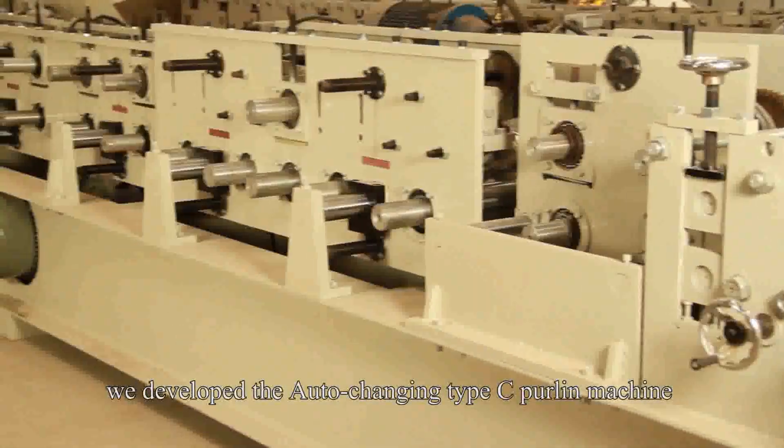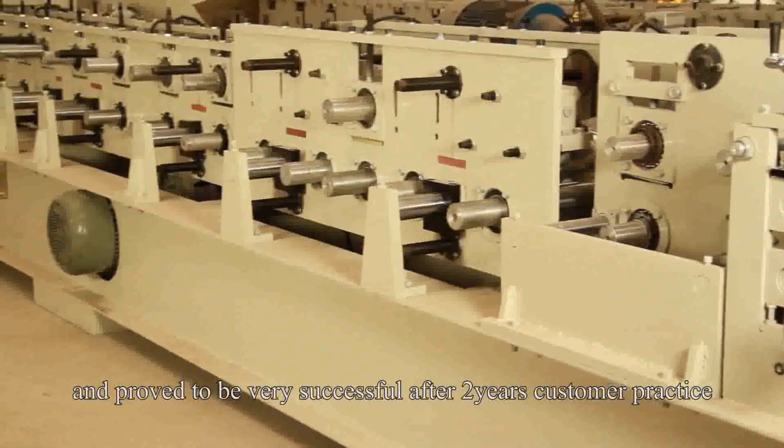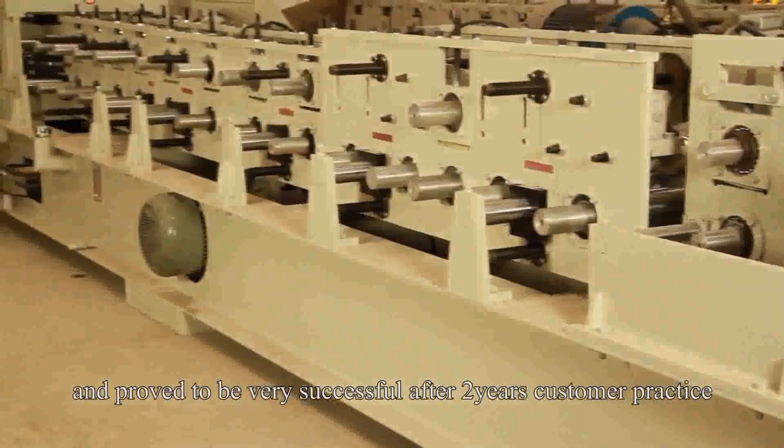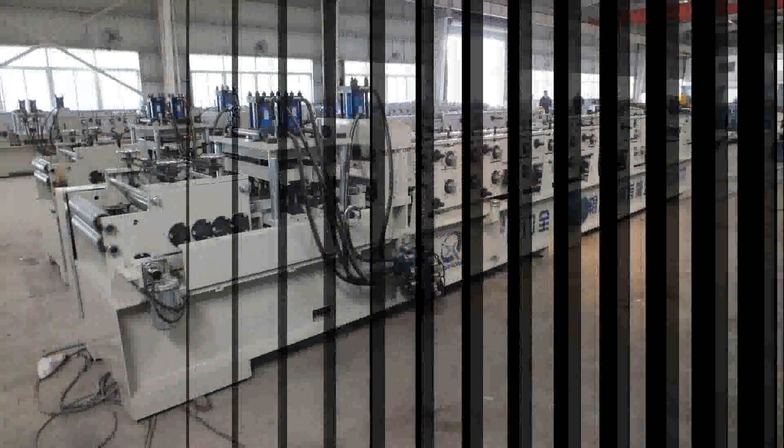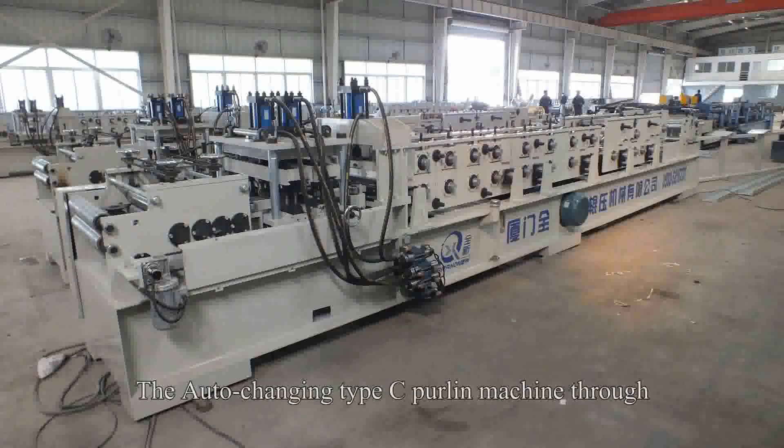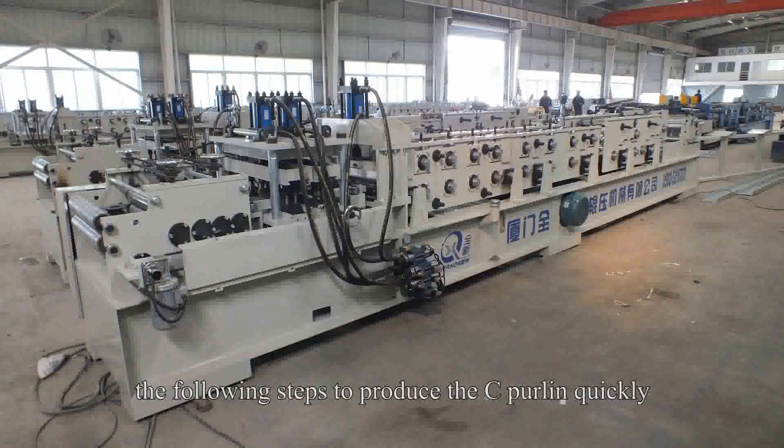We developed the Auto-Changing Type-C Perlin Machine and proved to be very successful after two years' customer practice. The Auto-Changing Type-C Perlin Machine uses the following steps to produce the C Perlin quickly.